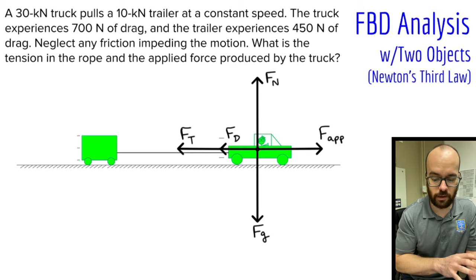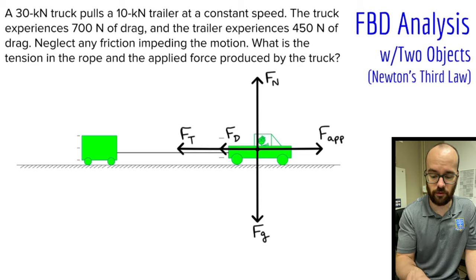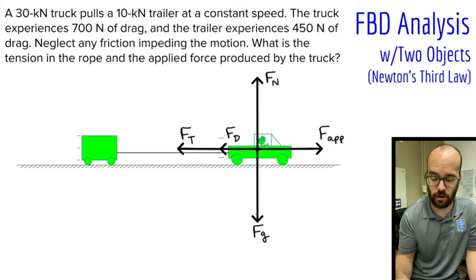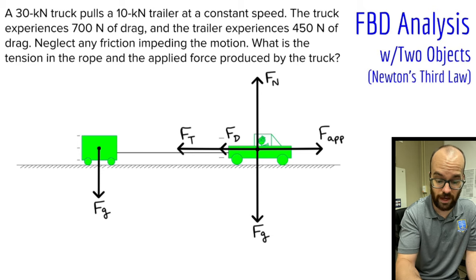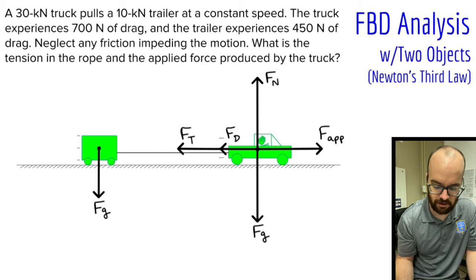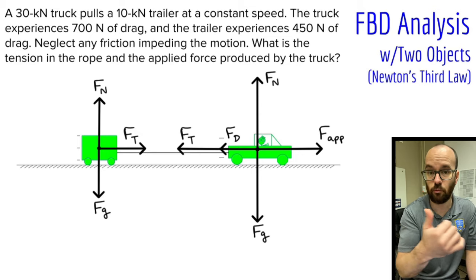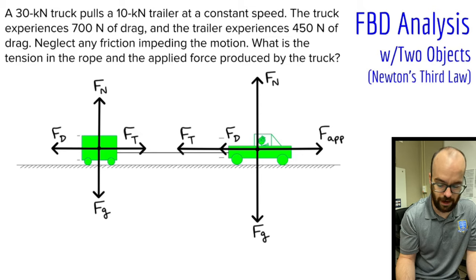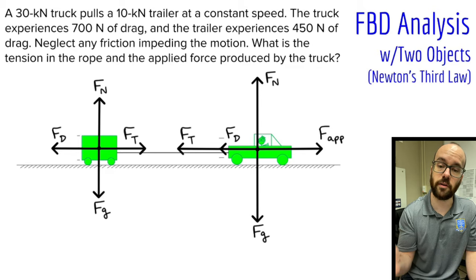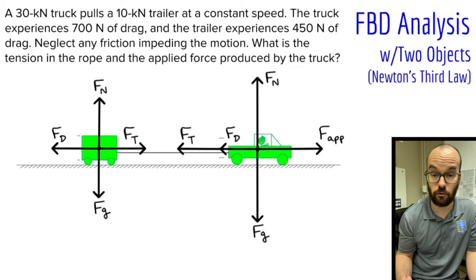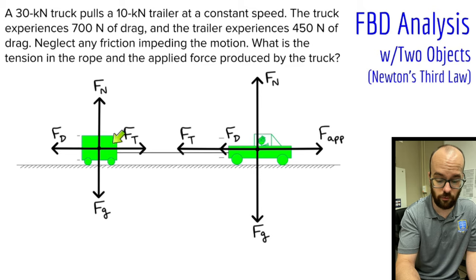Now let's draw a free body diagram for the trailer as well — we'll need both to solve for the applied force and tension. The trailer has a gravitational force downward; it's only 10 kilonewtons, so that force is a bit shorter. We also have a normal force from the road pushing upward, a tension force to the right pulling the trailer forward, and a drag force to the left since the trailer is also moving rightward. Those are the forces on our two free body diagrams.